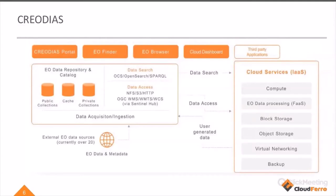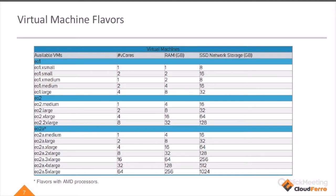When we talk about this cloud environment, we have to highlight that for our users we offer different virtual machines. We have a lot of virtual machines and the differences between them are mainly in cores, RAM, and SSD network storage. So depending on your work, the data you process, and how much data you process, you can choose the virtual machine which will be dedicated for you and your work.